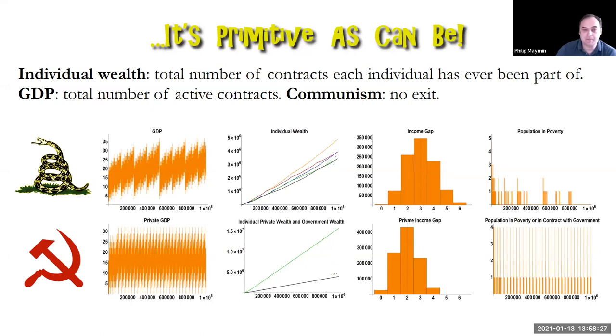Wealth would be after a certain point, you've been in some number of contracts. How many contracts have you ever been part of? That's your individual wealth. The GDP is the total number of active contracts at any given point. And what is communism or in general big government? We'll get to that in a second. Let's look at this first one. This is the American rattlesnake, don't tread on me. In the American rattlesnake economy, which is just a regular economy. Exactly. We just saw that evolution. The GDP is volatile, but grows. There's risk, but there's reward. Individuals, there are some people who are wealthier than others, but they're all growing. There is an income gap and there's a distribution.